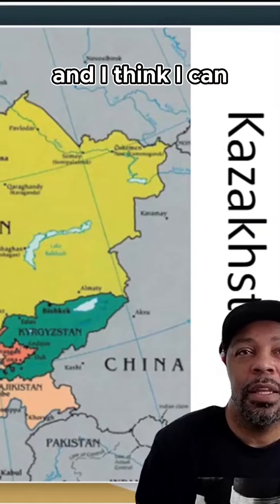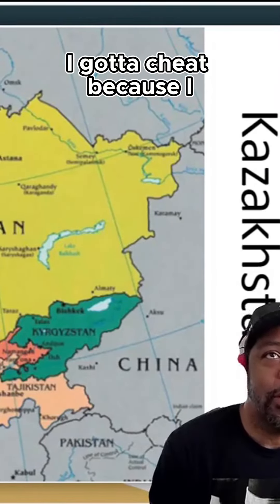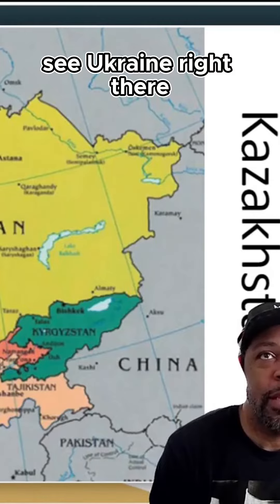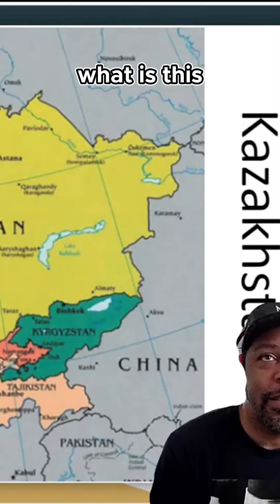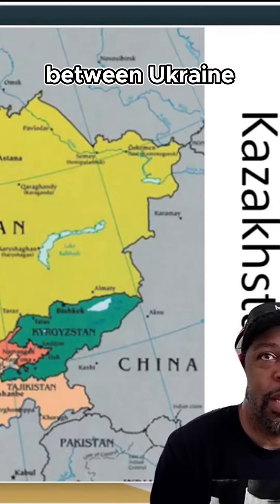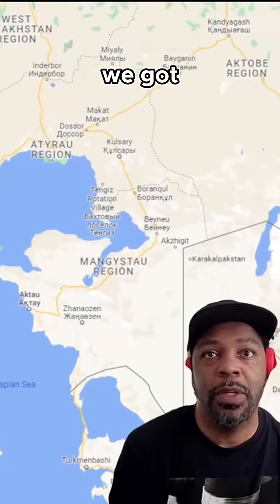I need to jump to my map to check — I can see Ukraine right there, but I'm trying to figure out what's between Ukraine and Georgia. So we're going to jump there real quick. All right, so we see Ukraine right there and we've got Georgia.